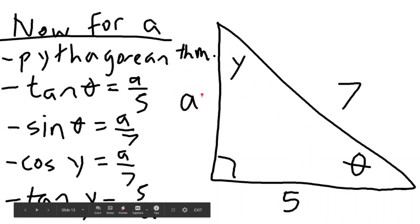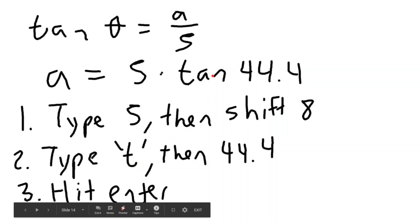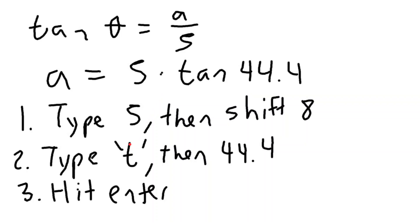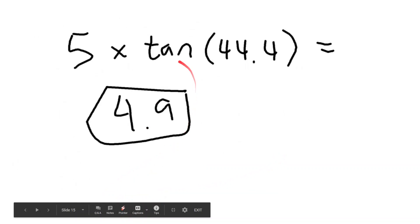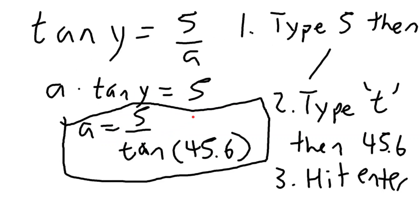Let's tackle tan theta equals a over 5 first. Multiply both sides by 5 to isolate a, so a equals 5 times tan(44.4). To type this into your online calculator: type 5, then hit the multiply sign (Shift+8 for the asterisk), then type 'tan' — just the letter t followed by 44.4 — and hit enter. The equation should look like 5 * tan(44.4), and we get a equals about 4.9.